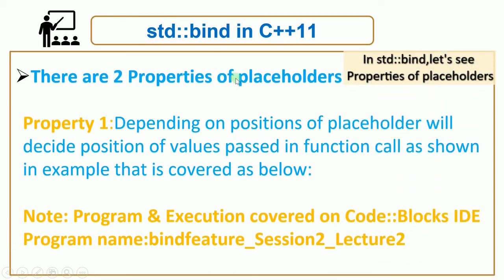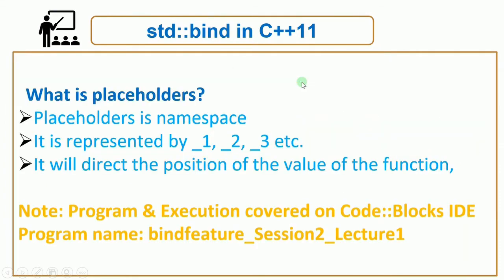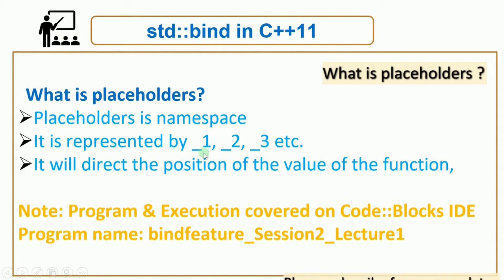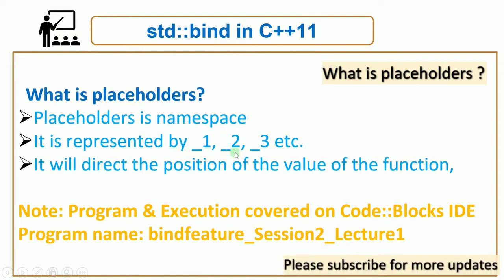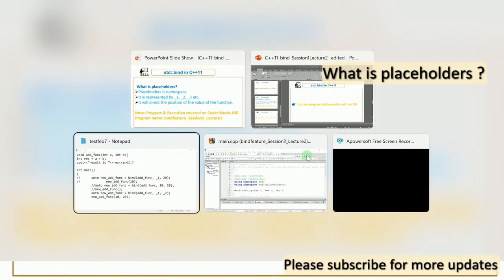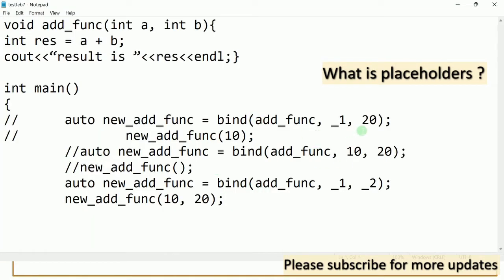Let us see the properties of the placeholders. We have already seen what placeholders are, so just quickly revising. First of all, it is in the namespace and it is represented by _1, _2, _3, etc. For example, in this notepad, when we give underscore and then a number, that means it is a placeholder when we call the bind function.